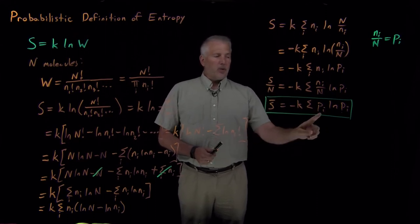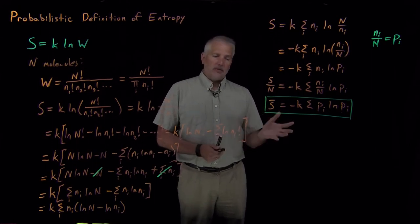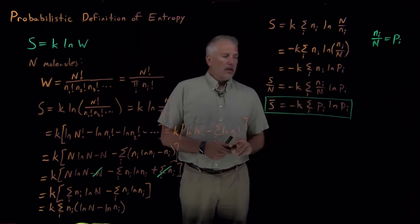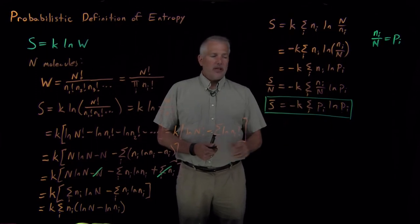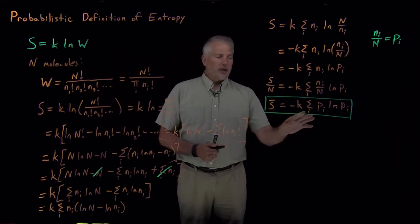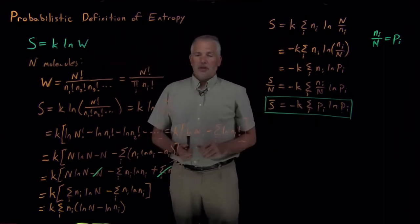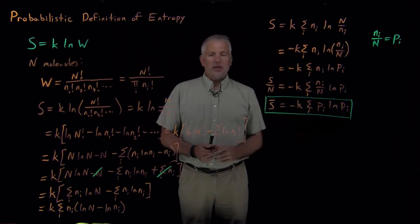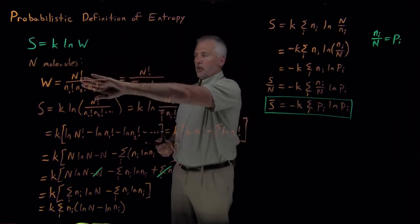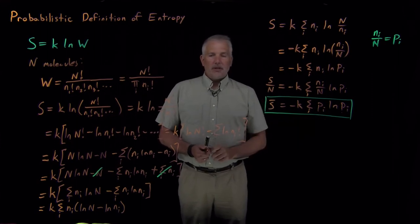This formula tells us how to calculate the intensive entropy as a function of probabilities, and we'll work an example in just a second. If I know the probabilities for occupying state 1, 2, 3, confirmation 1, 2, 3, or product 1, 2, 3, I just sum up p_i times log p_i for each state, multiply by negative k, and that gives the intensive entropy. This is very convenient because multiplicity is long gone — I don't need it. I just need the probability of occupying each state.